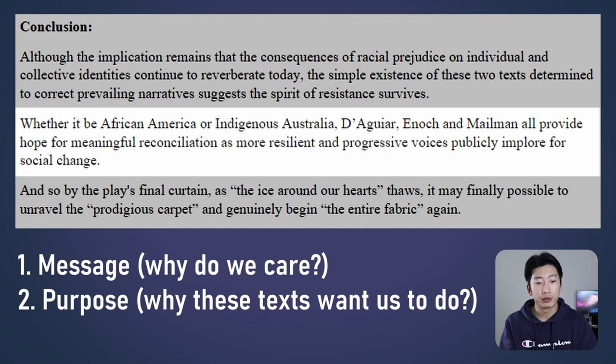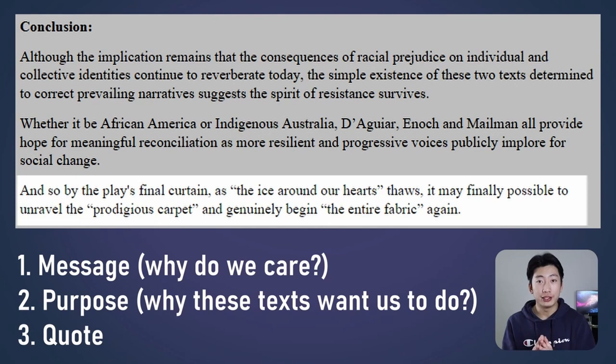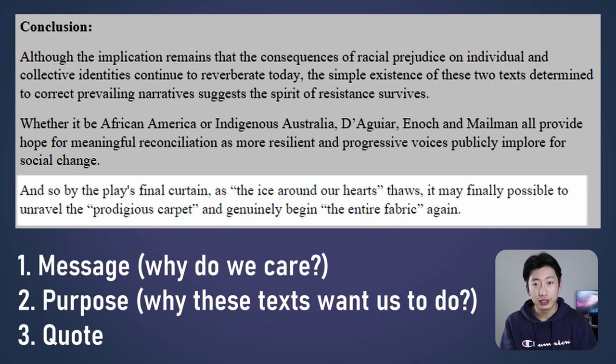Third — and this is a bit optional — I found it really powerful if you could end your essay with a quote from one of your texts. In this case I actually had one quote from both of my texts. Since my second text was a play, I also used a bit of theatre language: 'and so by the play's final curtain, as the ice around our hearts thaws, it may be finally possible to unravel the prodigious carpet and genuinely begin the entire fabric again.' This is talking about the social fabric and how these two books show that we can correct and change the social fabric we're in.